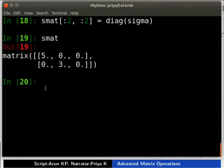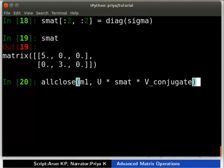SM80 is a 2 by 3 matrix created for multiplication by placing values of sigma as diagonal elements and 0 elsewhere. Type as shown. It returns true. It means elements in M1 and in product of U, sigma and V underscore conjugate are equal.